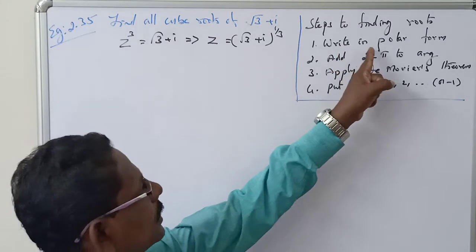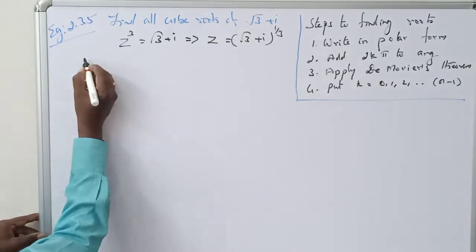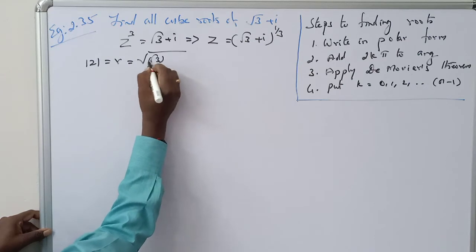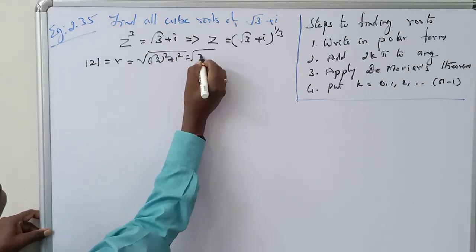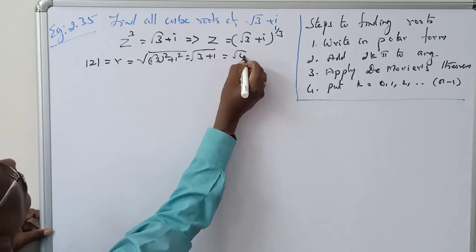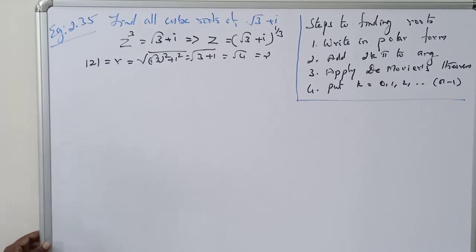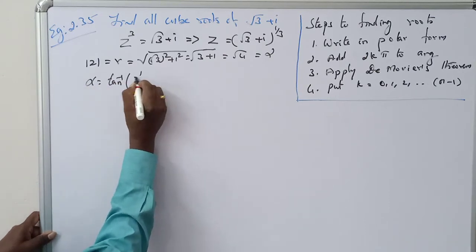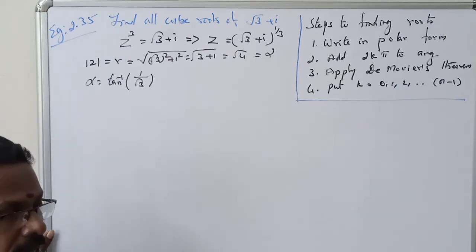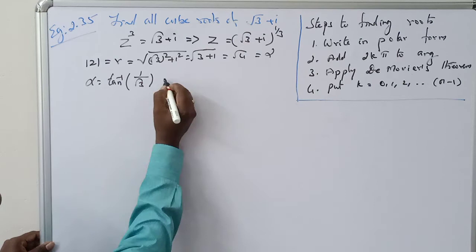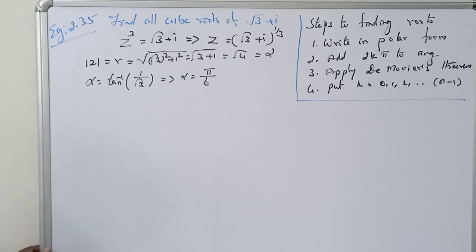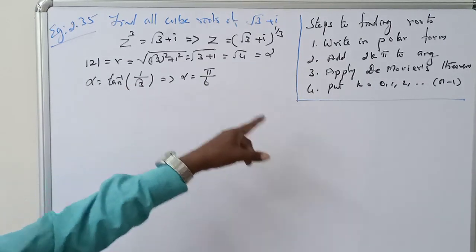So what is the first step? Write it for alpha. First, R equals mod Z equals the square root of (√3)² + 1² equals √(3 + 1) equals √4 equals 2. So R equals 2. Now alpha equals tan inverse of (b/a) = tan inverse of (1/√3). Since tan(30°) equals 1/√3, alpha equals π/6.